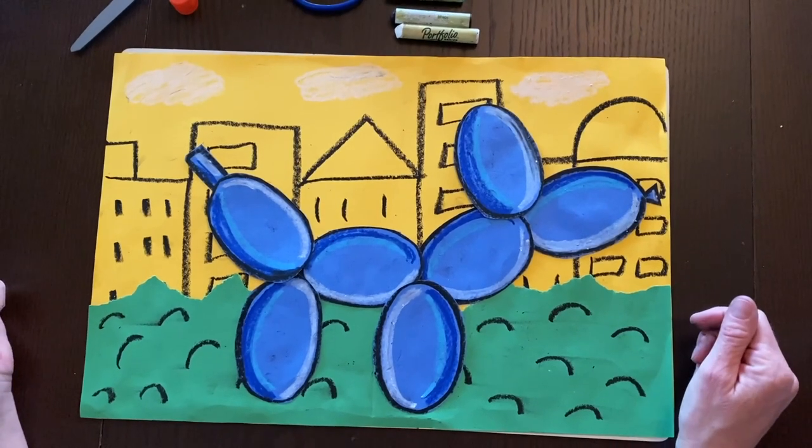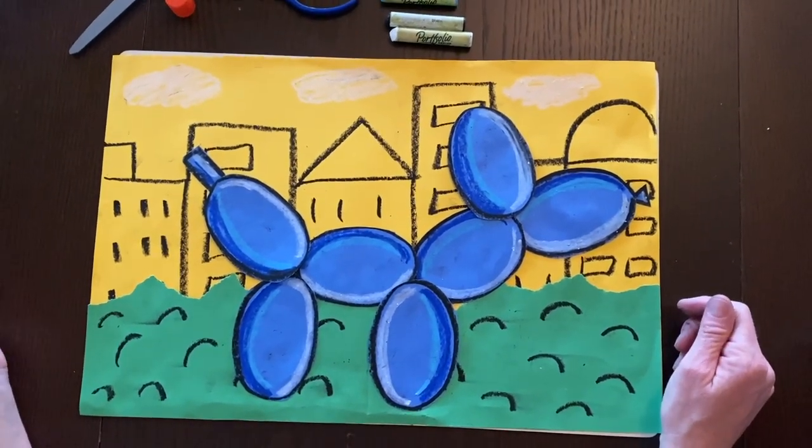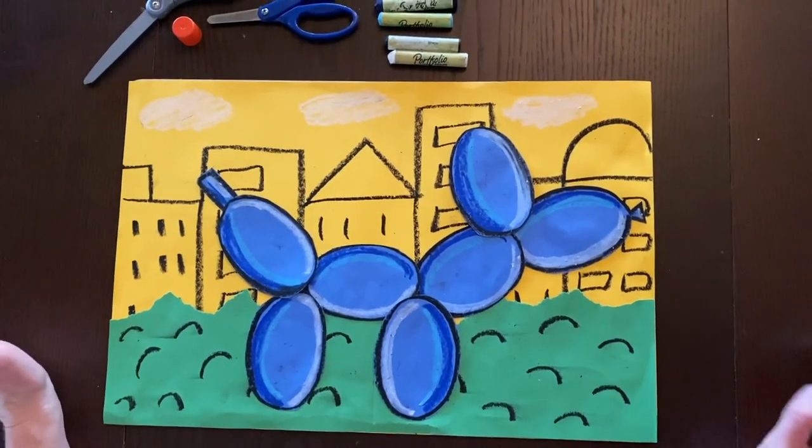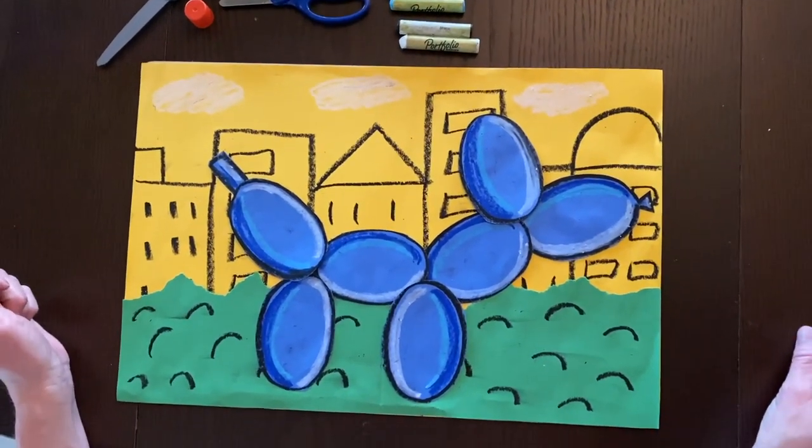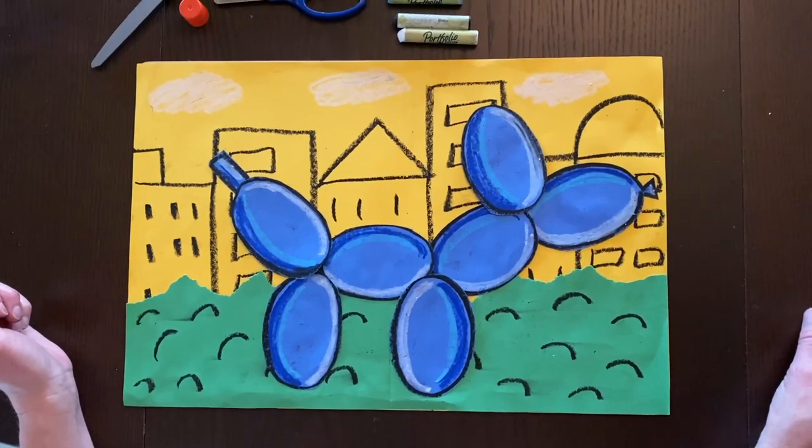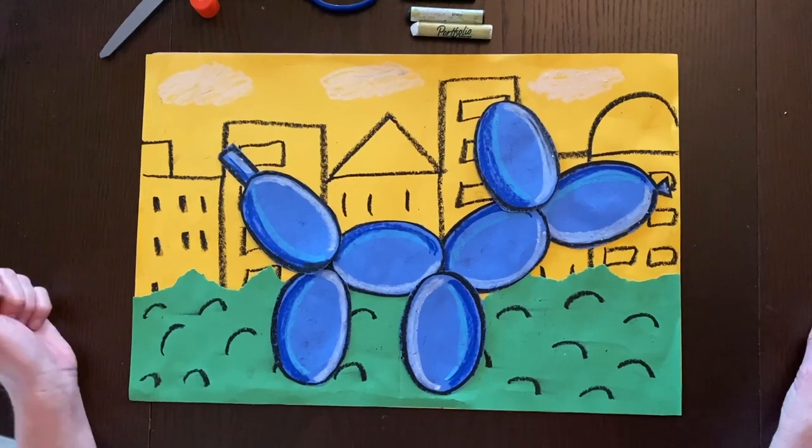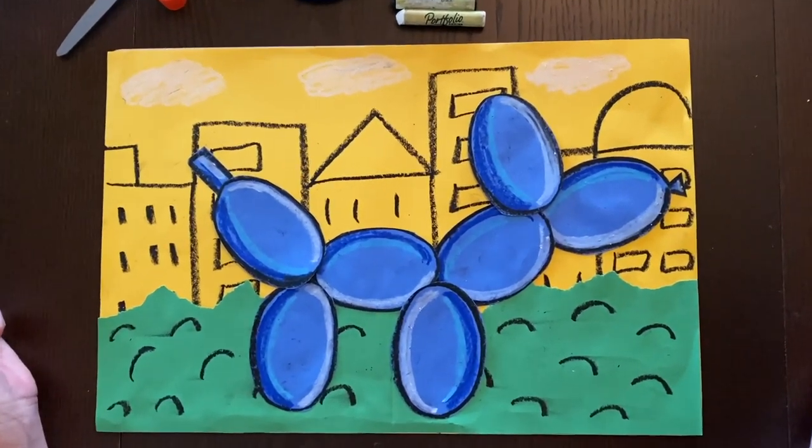I highly recommend that you Google Jeff Koons and take a little bit of a look about all his really cool balloon dogs. They come in all different colors. He has a really neat big pink one and I think he has a really neat red one. So kind of take a look and you'll get a really good idea of the scale of how large these sculptures are. All right. Have fun and see you next time.